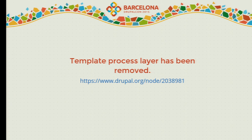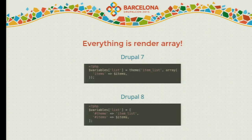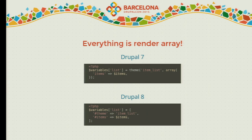There is a change record if you want to read more about the discussions behind this removal. Now, without the process layer, we have all the render arrays going to the templates as they are. We are rendering them as late as possible — after the template. So if you want to change your render array in the template, it is still possible. All the data remains structured and can be changed at any point before rendering.